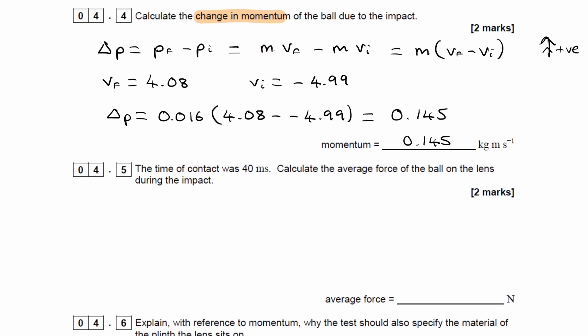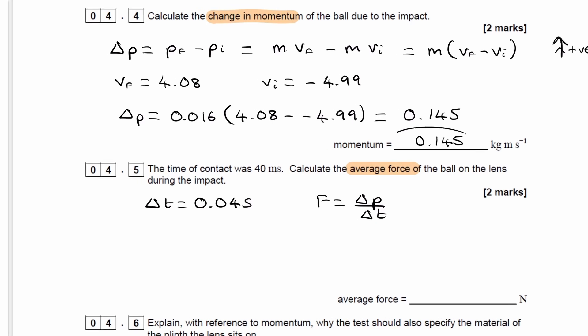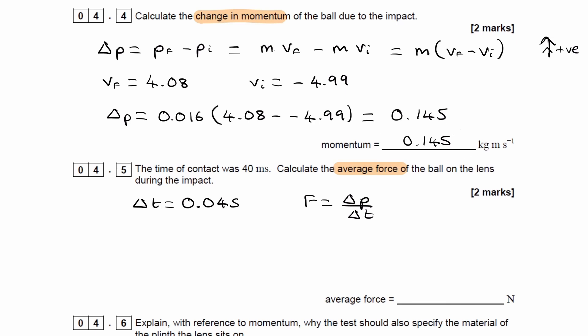For 4.5, we're told the time of contact. So time of contact with the lens is 40 milliseconds. Milli is 10 to the -3. So divide by 1,000, we get the time in seconds. We're trying to work out force. So if we're trying to work out force, we have to use rate of change of momentum. So we have the time. We have the change in momentum from earlier. Divide the two things. So 0.145 is the change in momentum. Time is 0.04. And that gives us 3.63 newtons.